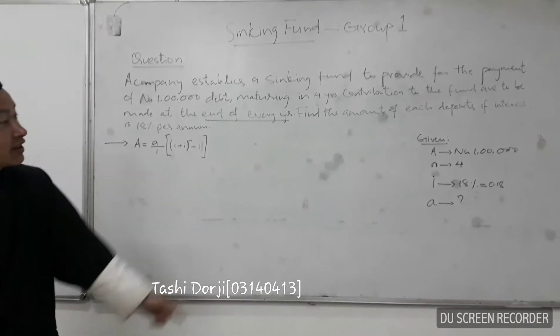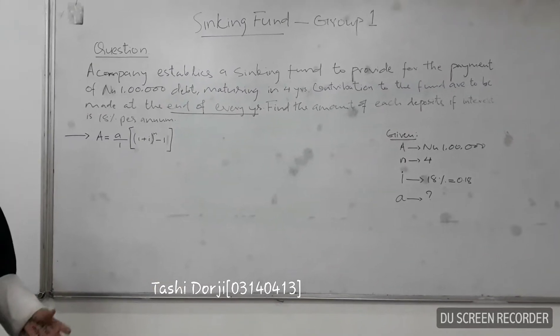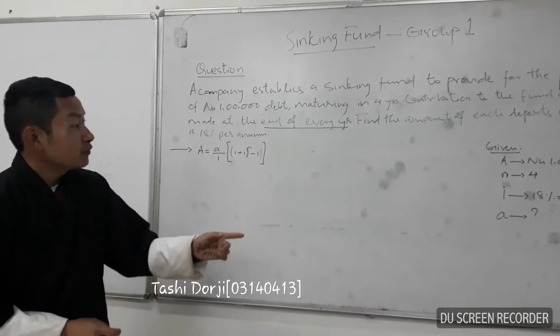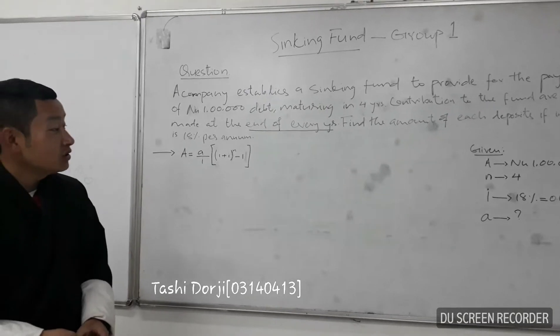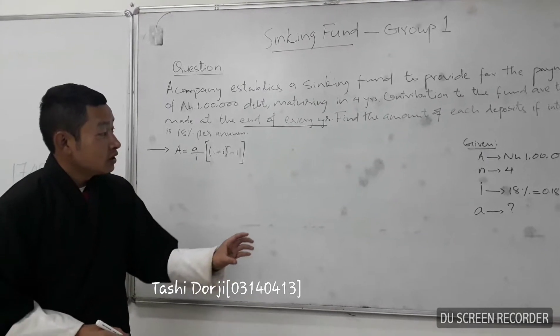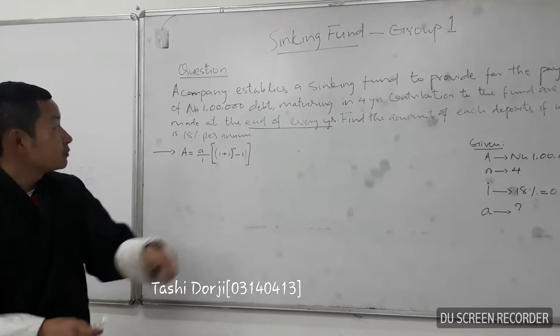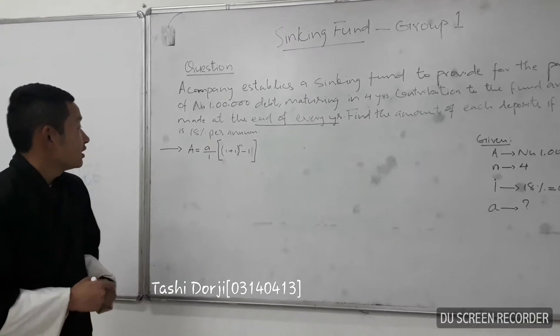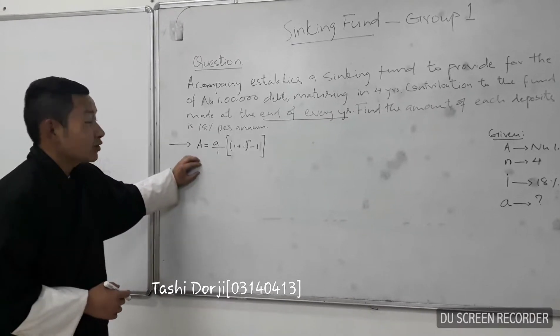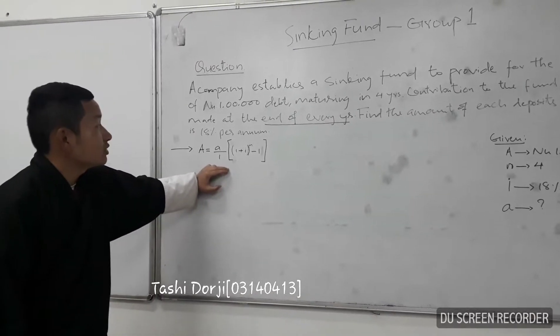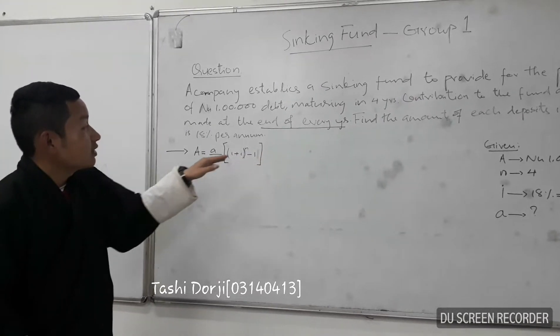In this question, the given are: a debt of one lakh which is the total debt that the company has to pay, the number of years is four years, and the interest is 8%. We have to find the small 'a', that is how much we have to deposit to recover the debt in four years. This is the formula to solve this question. We have used this formula because the question says contributions to the fund are to be made at the end of each year. Because of this we have to use ordinary annuity formula.